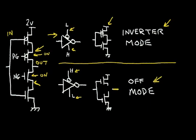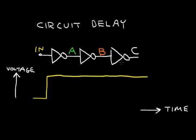Before we describe the operation of the D flip-flop, let's present the concept of circuit delay. Here I've drawn three inverters in series. I've labeled the input of the first inverter 'in,' the output of the first inverter 'A,' the output of the second inverter 'B,' and the final output 'C.' Let's analyze what happens as I change the input voltage as a function of time, with time on the horizontal axis and voltage on the vertical axis. The input starts at 0 volts and switches high to a logic 1.